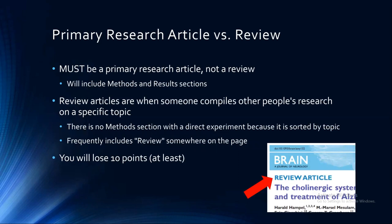This has to be a primary research article, not a review. Primary research articles are written by the scientists explaining the materials and methods — they go through all the steps that occurred and present the direct results. Review articles compile all the research into one coherent paper; I don't want that. I want a direct experiment that somebody has done. If you use a review article, you are automatically going to have 10 points deducted. The other problem is that review papers are listed by topic instead of being listed as materials and methods and results, which will make it very hard to set up your presentation.